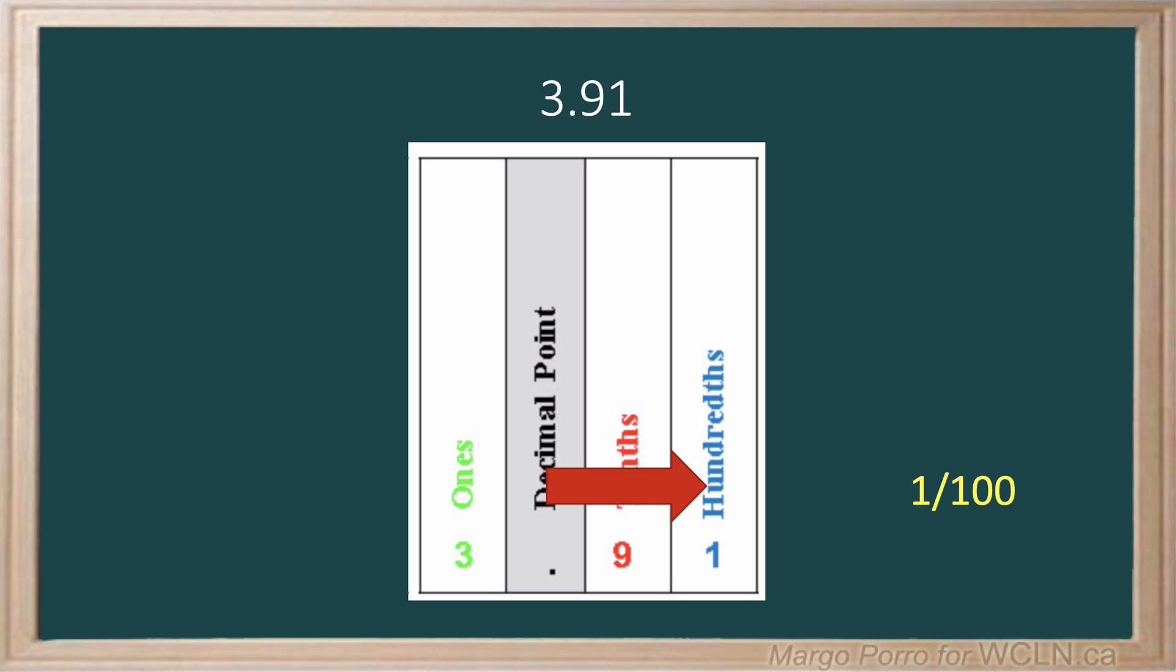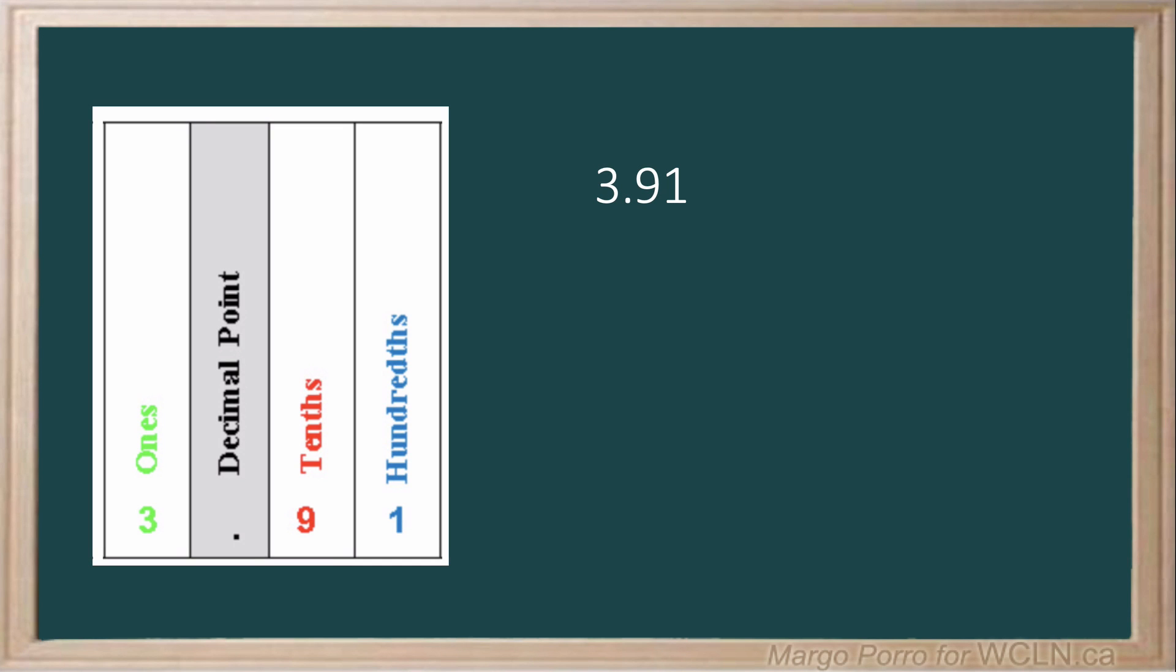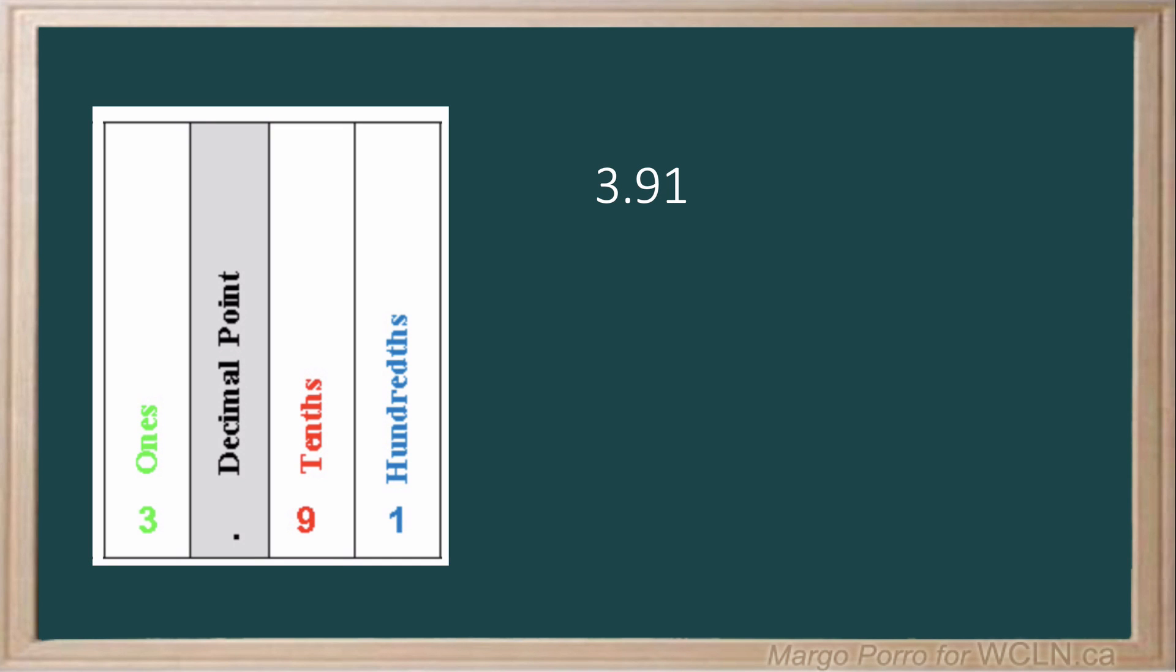When we say or read decimal numbers, we read them differently than the numbers to the left of the decimal. For a number like this, you will often hear people say three point nine one, but in math we read numbers mathematically. It helps to show we understand what they represent. So how do we say this number? We say the three, then where the decimal is, we say 'and'.